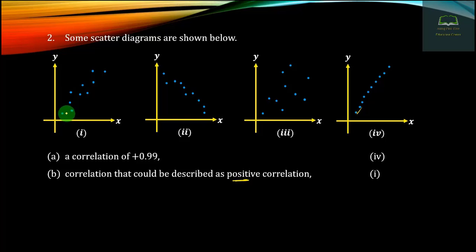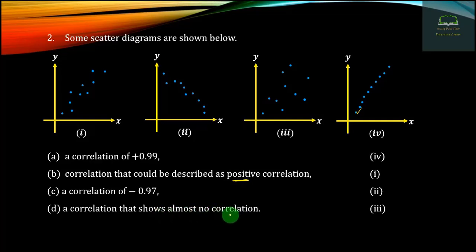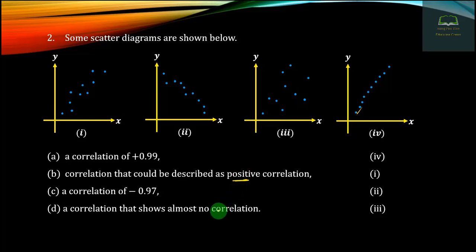Number 5 is the partial correlation. So if x increases by 1, then y increases by 1. Number 6 is minus 0.97. Number 2 is the partial correlation. Number 3 and Number 4 are also partial correlations.